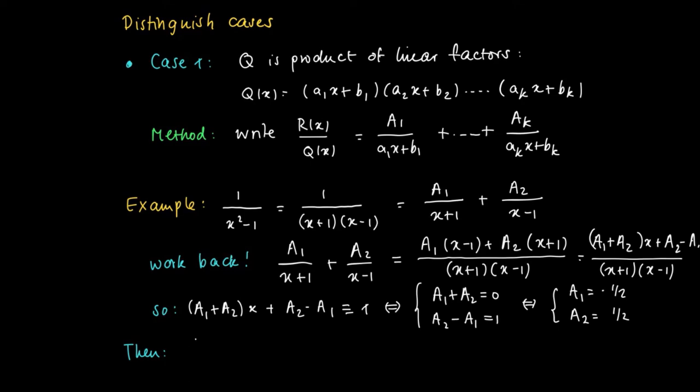So there's a unique solution, so there are unique constants such that 1/(x²-1) can be written as A₁/(x+1) + A₂/(x-1). In this case A₁ = -1/2 and A₂ = 1/2, so we write the primitive of -1/2 divided by (x+1) plus 1/2 divided by (x-1).